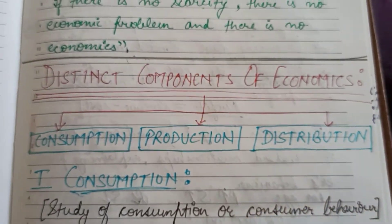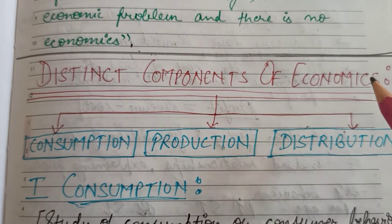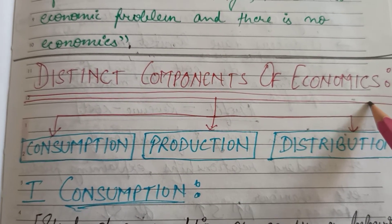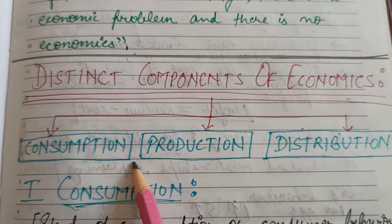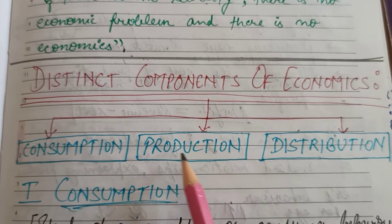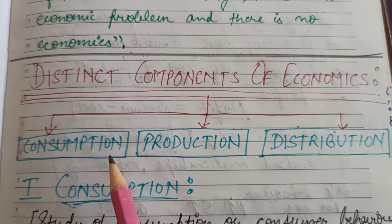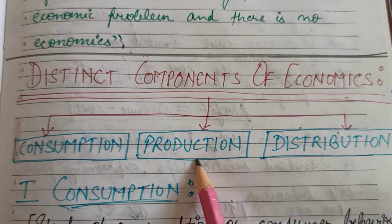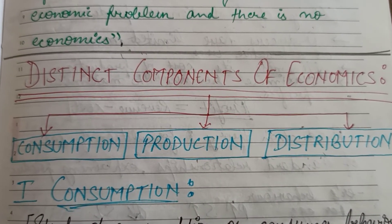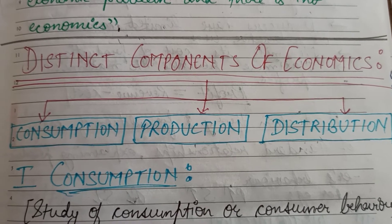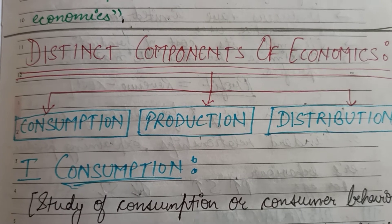Next are the three distinct components of economics — these are the various components on which the study of economics is based, and you must be very clear on them. We have studied these components in the previous video also, but now we will study them in greater extent. The first one is consumption, the second one is production, and the third one is distribution. These are the three components on which your study of economics is based.